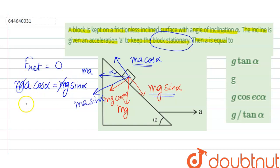Cancelling m with m. So we get here, a equals to g sin alpha upon cos alpha. On further solving, we get a equals to g tan alpha.